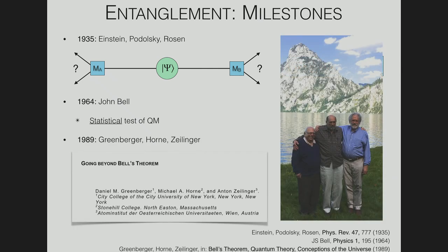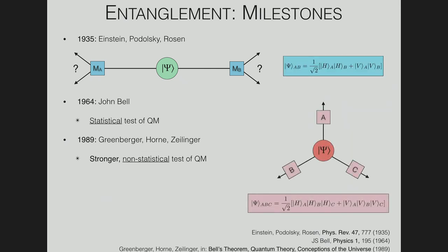Bell's test was statistical — you measure Bell's parameter S through a series of measurements on both particles. In the 1980s and early 1990s, Greenberger, Horne, and Zeilinger proposed a new test of non-locality that is non-statistical — an all-or-nothing test. This rules out the need to do a series of statistical tests, and crucially, it requires three or more particles to be entangled. Here I'm showing you a three-partite GHZ state.